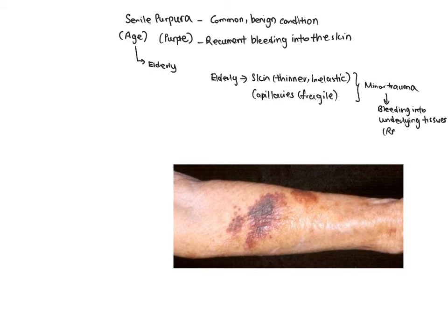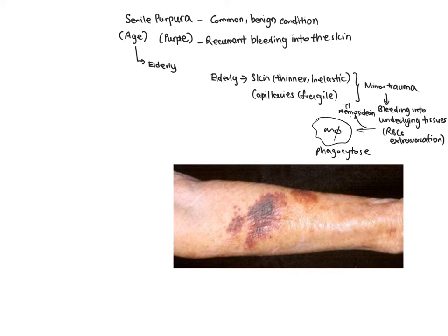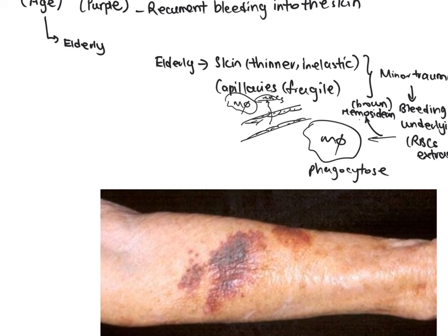You get red blood cell extravasation — that means the red blood cells leak out into the surrounding tissues. As a result, the surrounding macrophages will try to phagocytose them. The bleeding also causes a deposition of pigments like hemosiderin, which gives the skin its brownish color appearance. So basically, the capillaries are more fragile, more likely to become damaged, and leakage of red blood cells can occur.